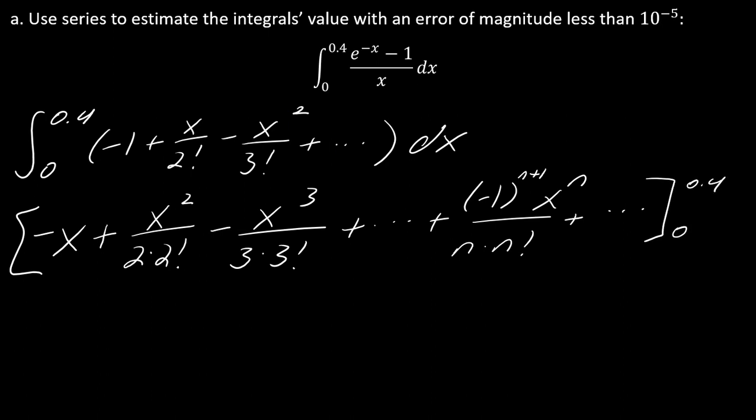Now all of this needs to be evaluated from 0 to 0.4. This is where that whole error of magnitude less than 10 to the negative 5th is going to come in. If I plug in this 0.4, that's going to give me some tiny decimal. If I subtract off me plugging in the zero, the zeros are for sure just going to make all these zeros.